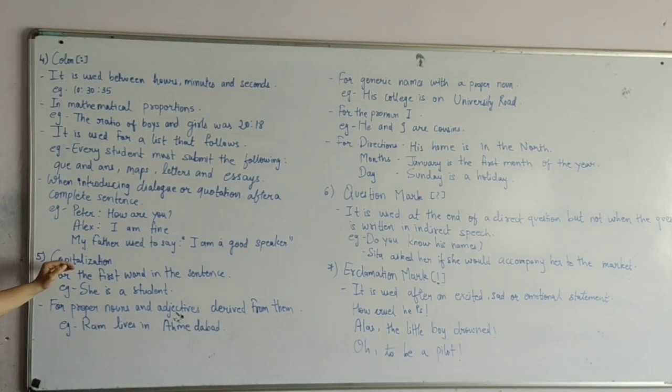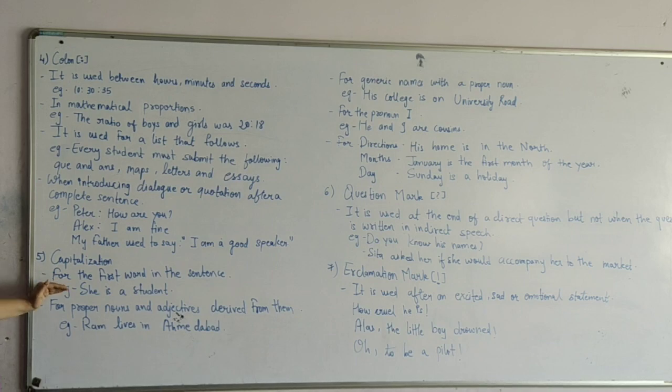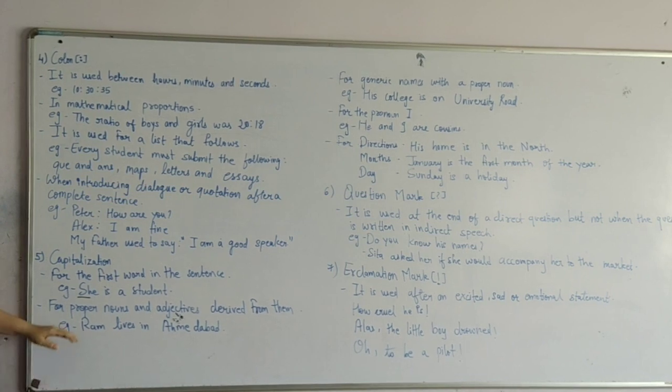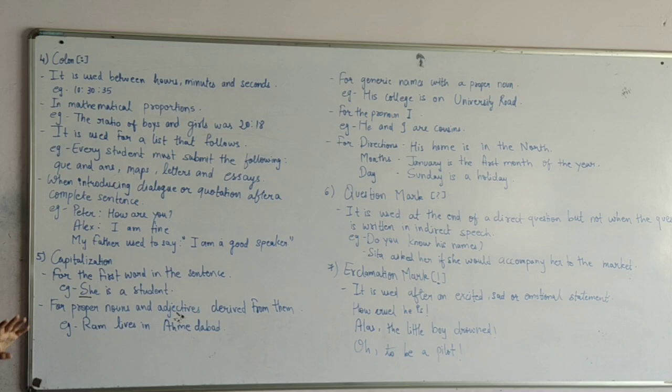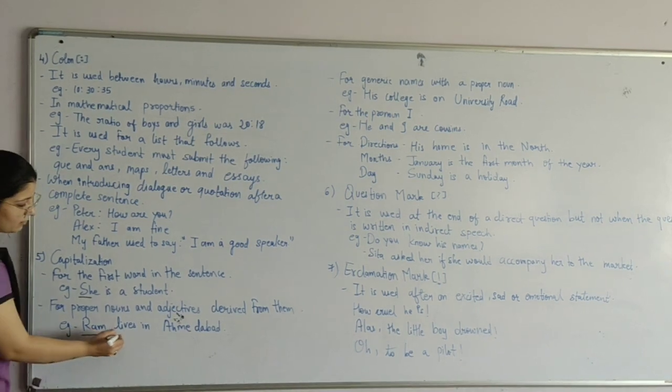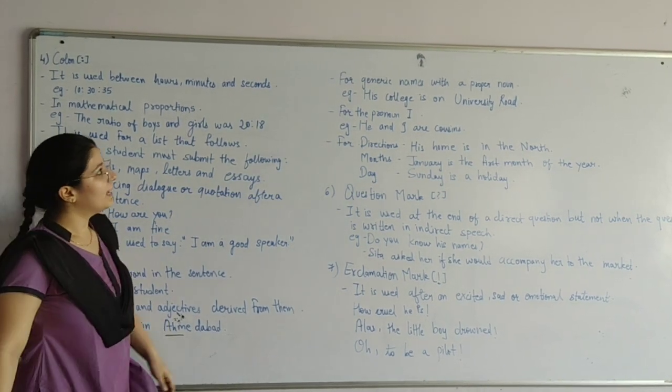Next, number five is capitalization. First, for the first word in the sentence. For example, she is a student. Next, for proper noun and adjective derived from them. Ram, Lily, and Daba.